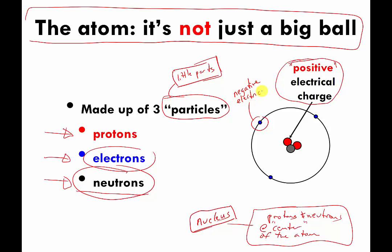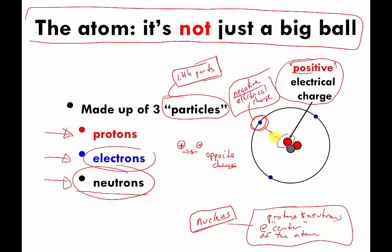The proton and the electron both have an electrical charge but they are opposite of each other. I'm going to draw a positive electrical charge with a plus sign and a negative electrical charge with a minus sign. When you have two things that have opposite electrical charges, they get pulled toward each other — they're attracted to each other. The electron, because it has a negative electrical charge, and the proton, which has a positive electrical charge, are a little bit attracted to each other. If you have two things with identical electrical charges — like two protons — they both have identical positive charges and they're repelled by each other.